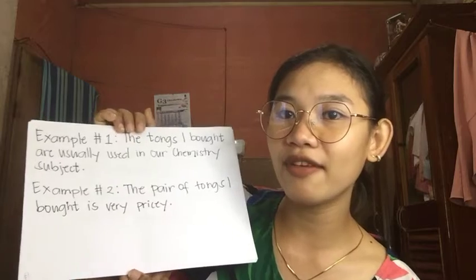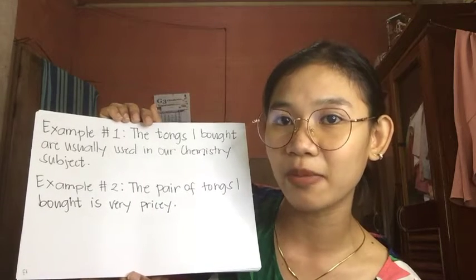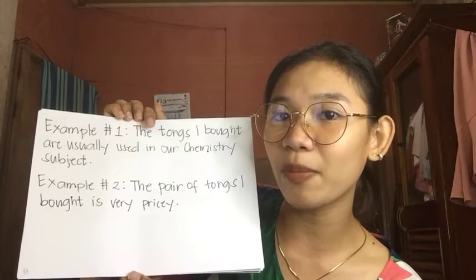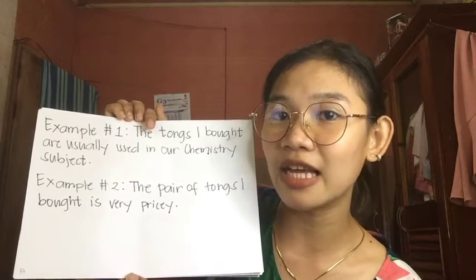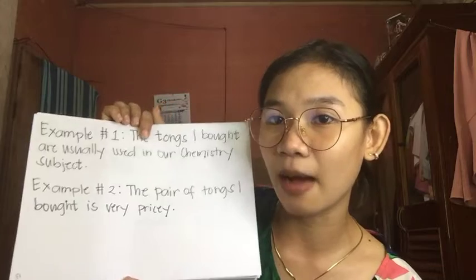Rule number seventeen: nouns that always come in pairs like scissors, glasses, shoes, tongs, sleeves, trousers, pliers, pants, chairs, etc. are always plural and require a plural verb, unless they are introduced by the expression 'a pair of' or 'the pair of.' In example one, the noun 'tongs' is plural, so we use plural verb 'are.' In example two, 'tongs' is introduced by 'the pair of,' making the noun singular, so we use singular verb 'is.'